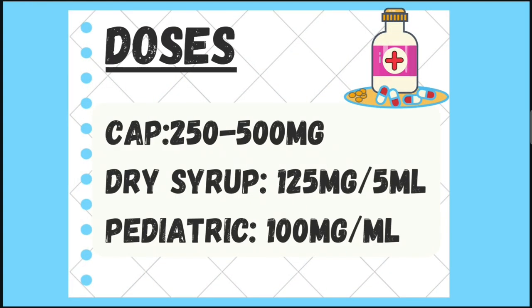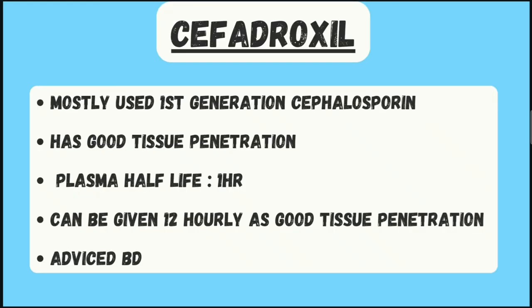The doses of cephalexin: in capsule form, 250 to 500 mg three times a day; in dry syrup, 125 mg per 5 ml; and in pediatric drops, 100 mg per ml.